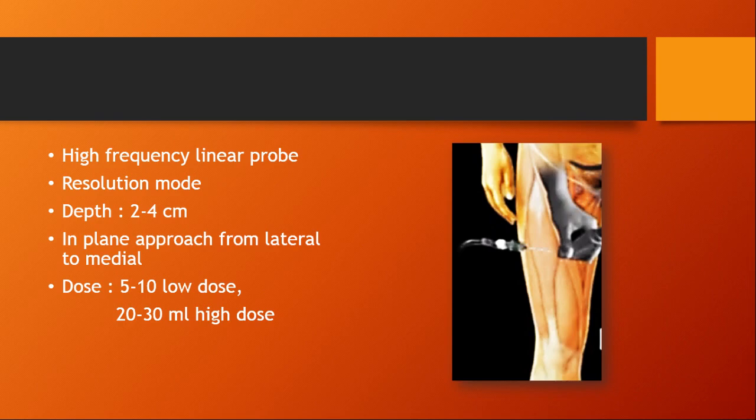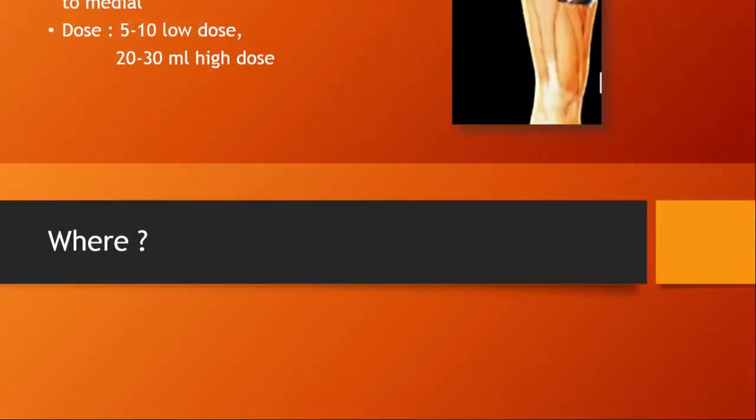The patient lies in the supine position and we place the probe on the front of the thigh, scanning first for the sartorius muscle. The main target is the femoral vessels. The high-frequency linear probe is placed horizontally on the medial aspect of the thigh.